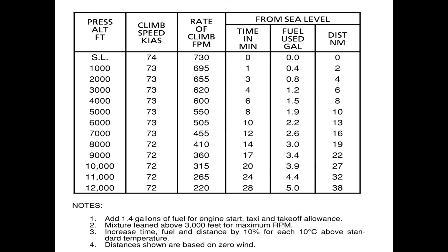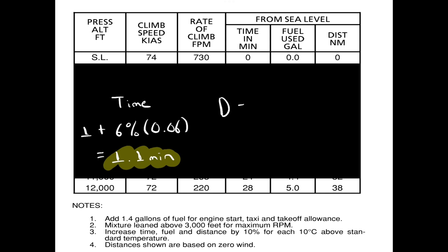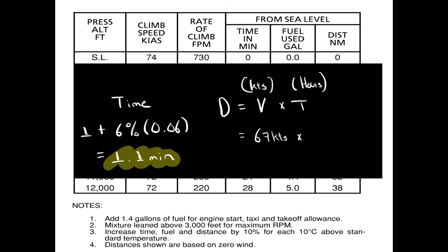Once we know this ground speed, using the time to climb to 1,000 feet that we previously calculated, we will need to determine our distance. We can use our flight computer again for this process, or we can use the formula of distance equals velocity multiplied by time, making sure that we have the right units — time will have to be in hours and speed will need to be in knots. After we complete this process, our distance to climb to 1,000 feet ended up being 1.2 nautical miles.